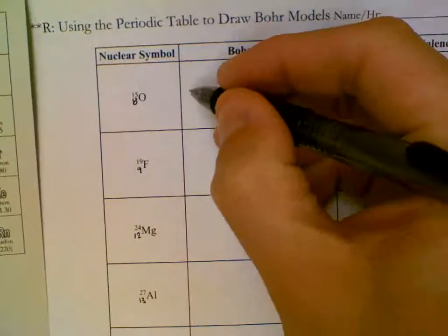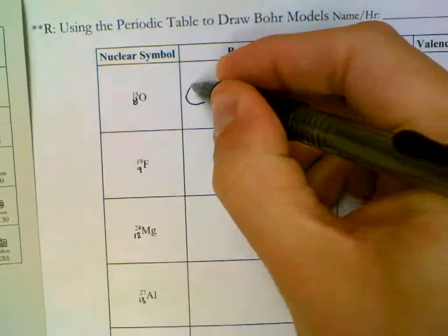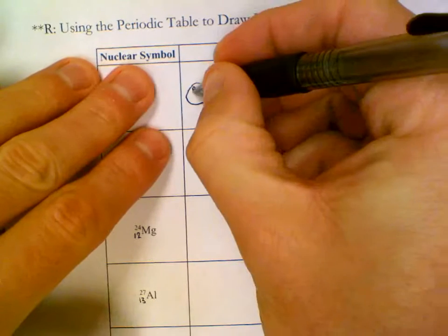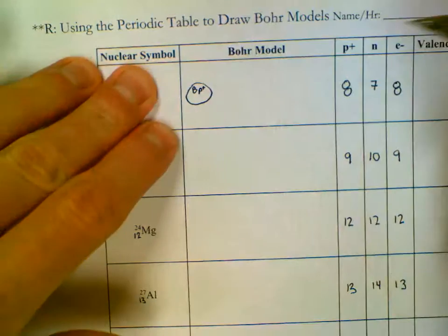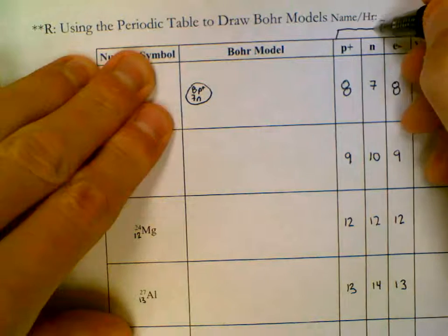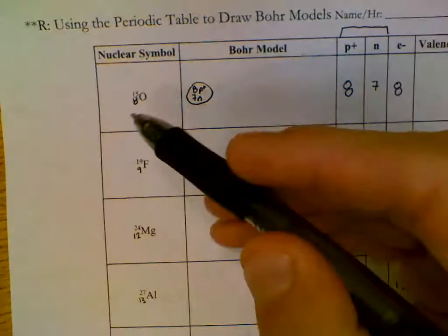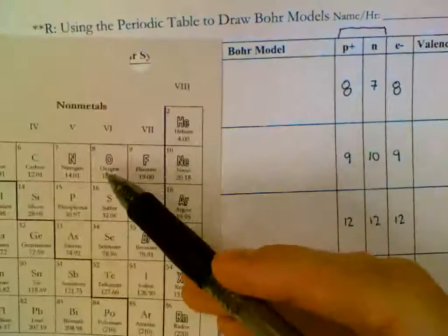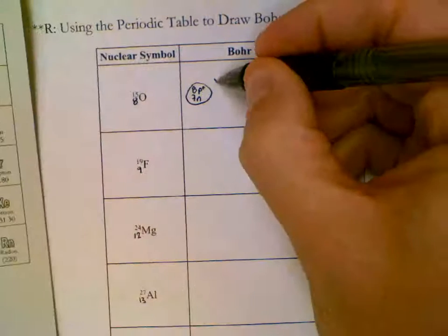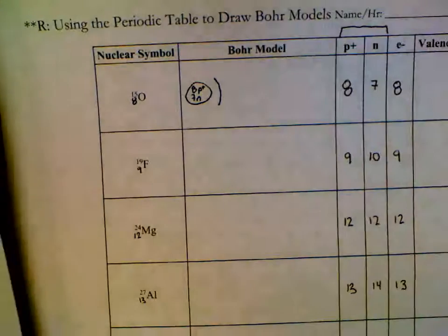On our Bohr models, I'd like you to draw a circle for your nucleus and just tell me how we're going to find protons and neutrons. There's 8 protons, 8 P plus. There's 7 neutrons. Both of these live inside the nucleus. Then we're going to find the atom. It's right here on the periodic table.